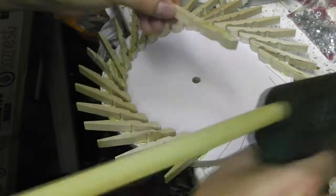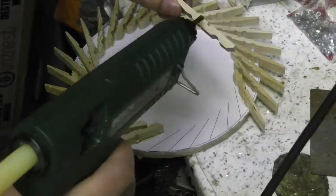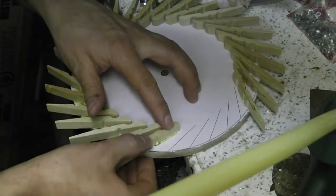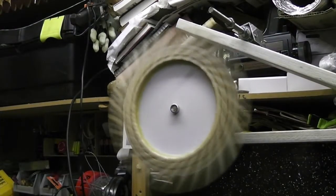That's my second attempt at an escapement wheel. That's the one I finally used. It has 30 teeth which means that each tick of the clock needs to take 2 seconds. Those skateboard bearings are really good.